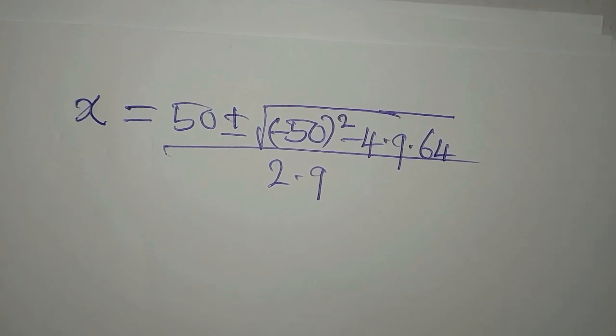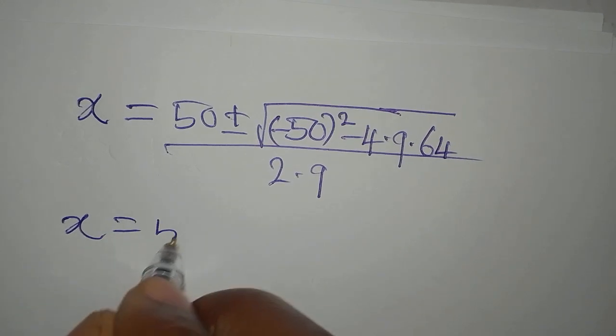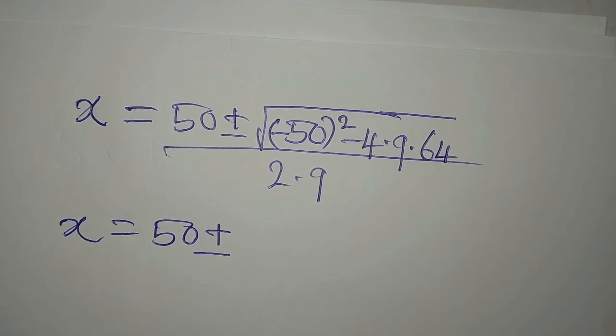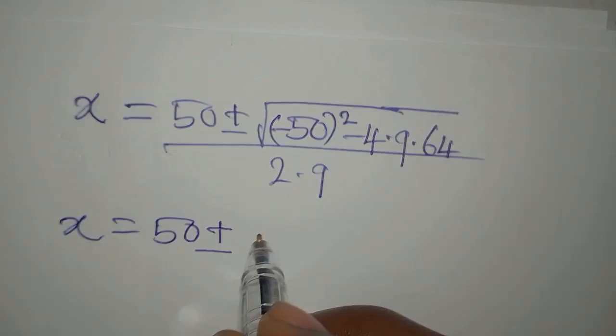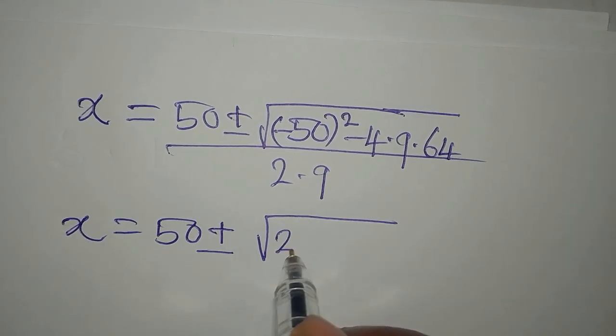So from here now, our x will be 50 plus or minus square root of negative 50 squared, which gives us 2,500.